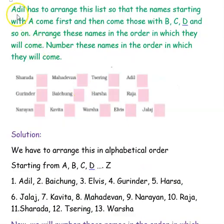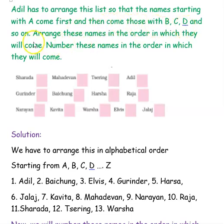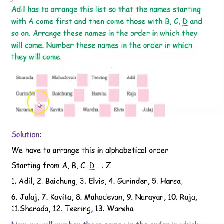Our first example: Ajil has to arrange a list so that names starting with A come first, then B, C, G and so on, from A to Z. Arrange and number these names in the order in which they will come. Here are the given names.